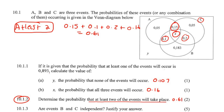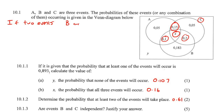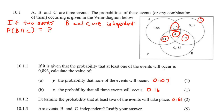The last question says: are events B and C independent? Justify your answer. We have a formula for independence. If two events, B and C, are independent, then the following formula is true: P(B and C) is equal to P(B) multiplied by P(C).